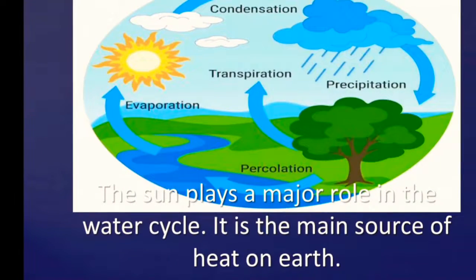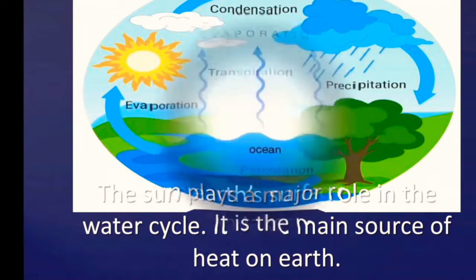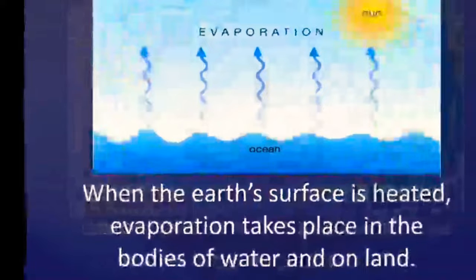The Sun plays a major role in the water cycle. The Sun is the main source of heat on Earth. When the Earth's surface is heated, evaporation takes place in the bodies of water and on land.